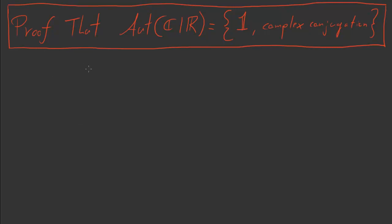So in this video, we're going to deliver upon an earlier claim. We're going to prove that Aut(ℂ|ℝ) only has two things in it, namely the identity map and complex conjugation. So this was a claim that we made in an earlier video, and now we're going to prove it.